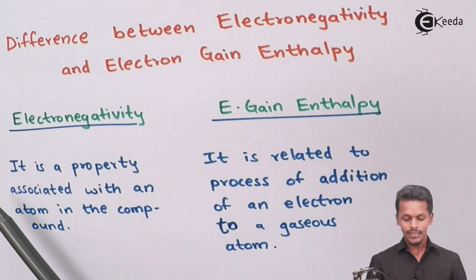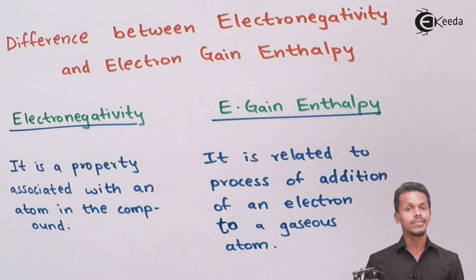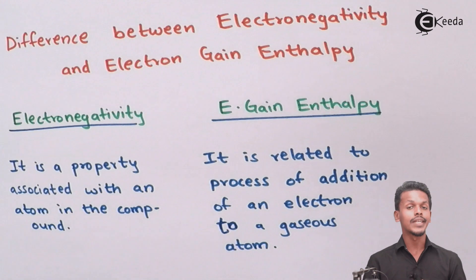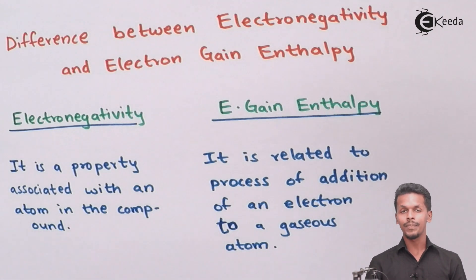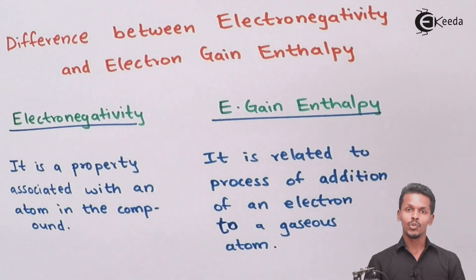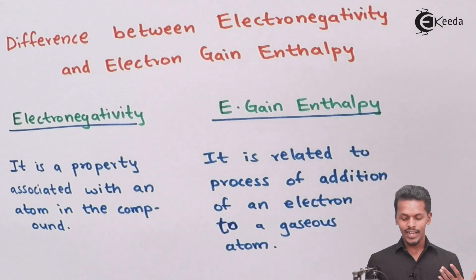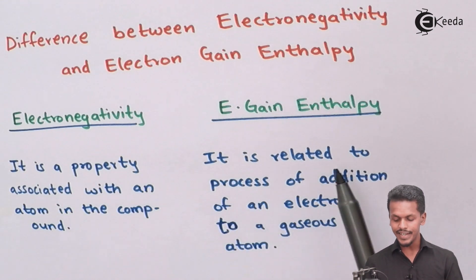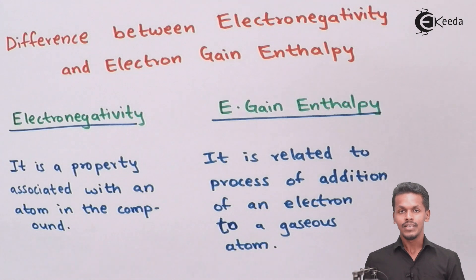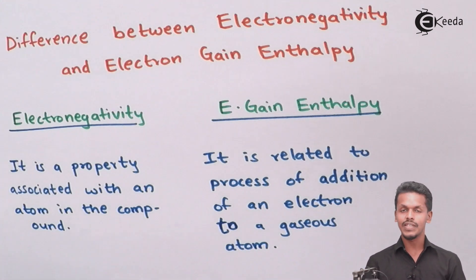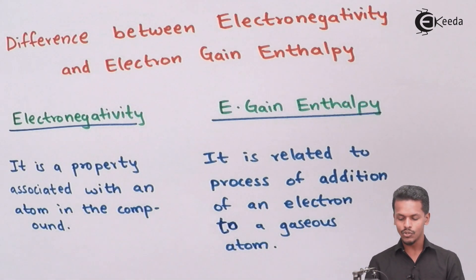The next difference: electronegativity is a property associated with an atom in a compound. Electronegativity deals with an atom present in a compound forming a covalent bond, and its value depends on the other atom to which it is bonded. While electron gain enthalpy is related to the process of addition of an electron to a gaseous atom — the electron is accepted by a gaseous atom and the change in enthalpy during that process is measured.